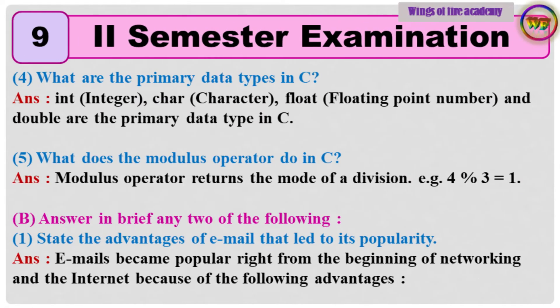4. What are the primary data types in C? Answer: INT (integer), char (character), float (floating point number), and double are the primary data types in C.